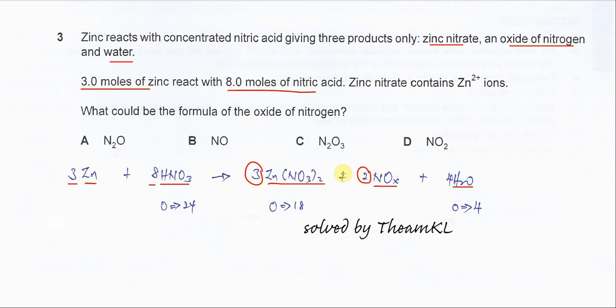After nitrogen is balanced, then we balance hydrogen. Hydrogen is 8 on left, and we need to make sure on right also 8 hydrogen. So we put 4 in front. So 4 times 2 is 8 hydrogen.